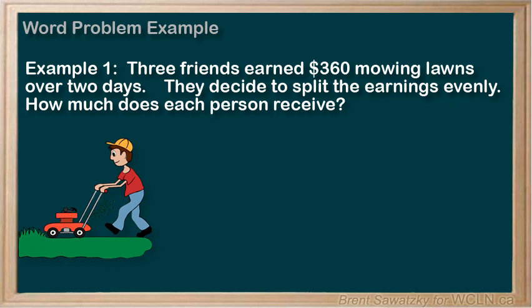So thinking of it in steps. Step one: read the problem. We've read the problem here and can basically summarize it as a group making some money mowing lawns. In the end they split up their money. We have a picture of what's going on.